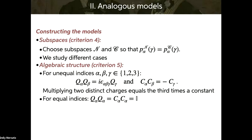How can non-commuting charges exist? A simple example: say you have a spin chain. Three charges there would be the Z component of total spin, the X component, and the Y component. If the total spin is conserved, each component will be conserved, but those three components don't commute with one another. A spin chain is like the simplest model where you have non-commuting charges.